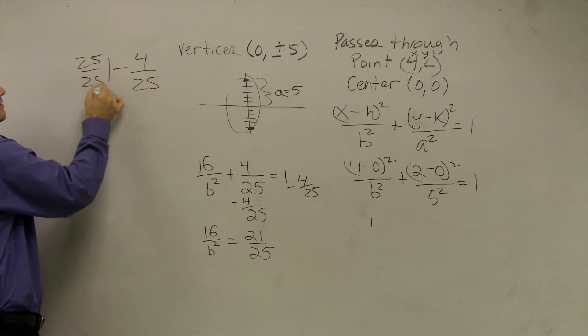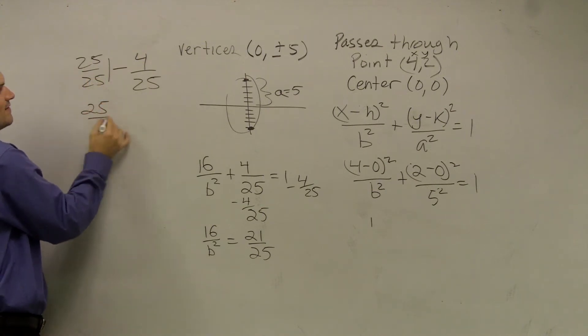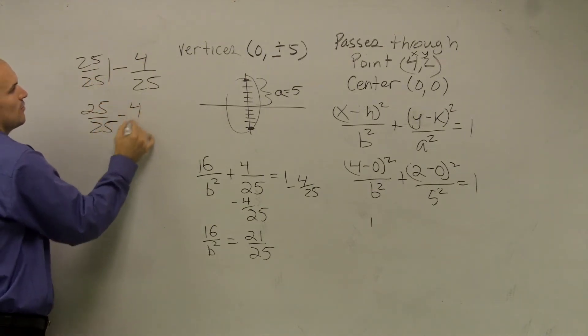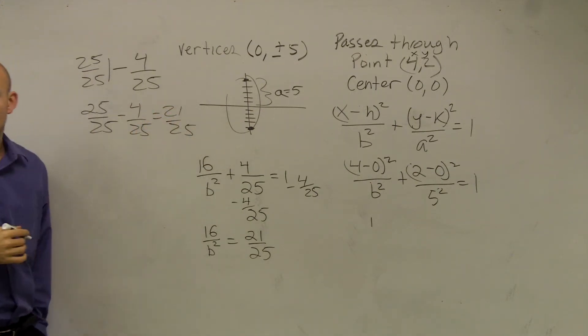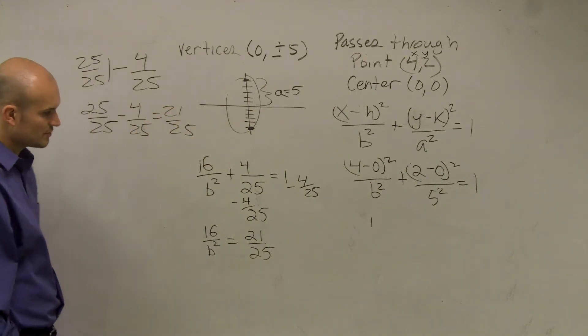1 minus 4/25ths, right? Change this to 25/25 minus 4/25, which equals 21/25, got me?